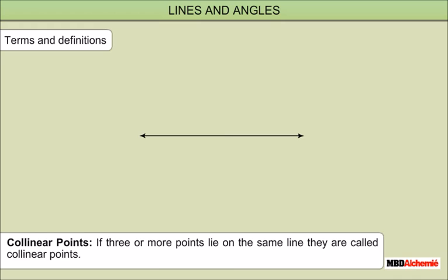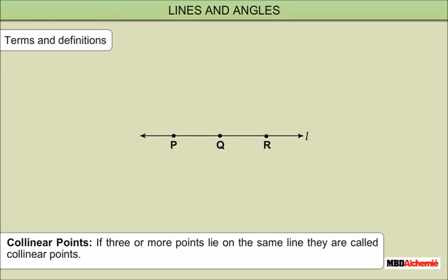Collinear Points: If three or more points lie on the same line, they are called Collinear Points. For example, in the figure below, points P, Q, R are collinear as they lie on the same line L.